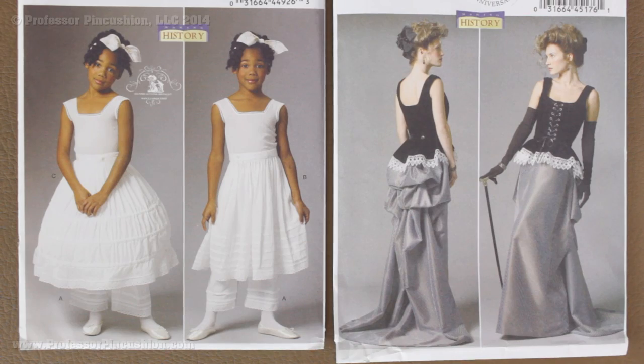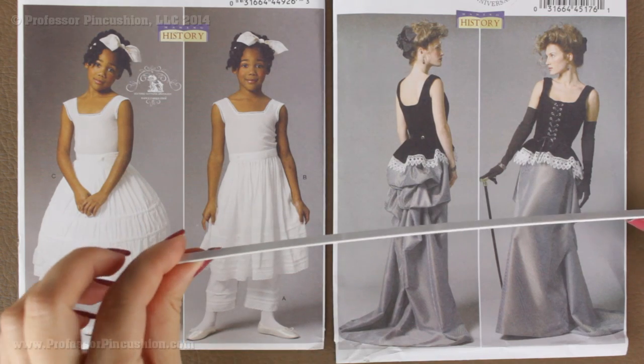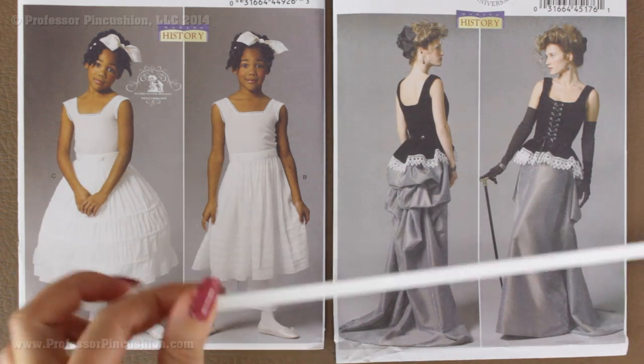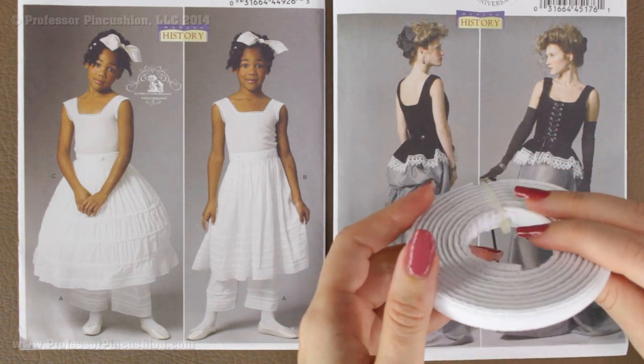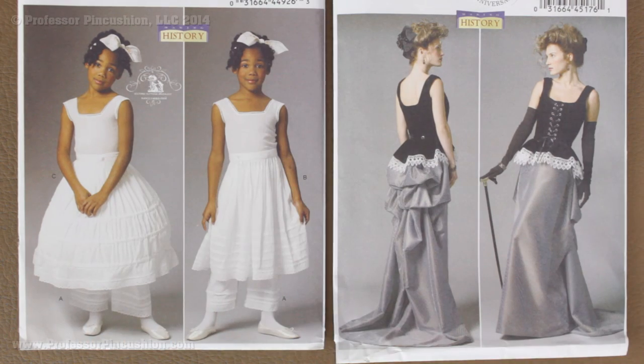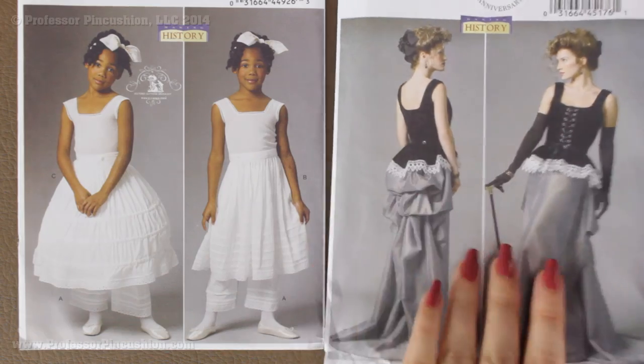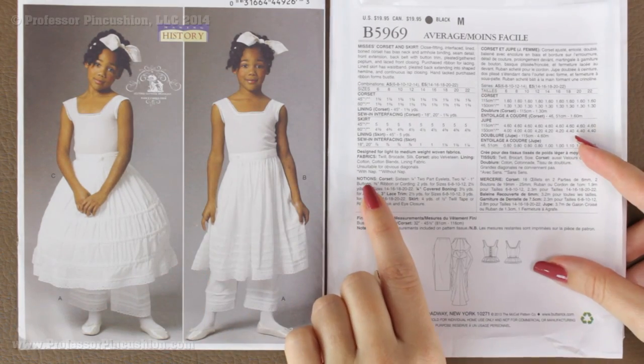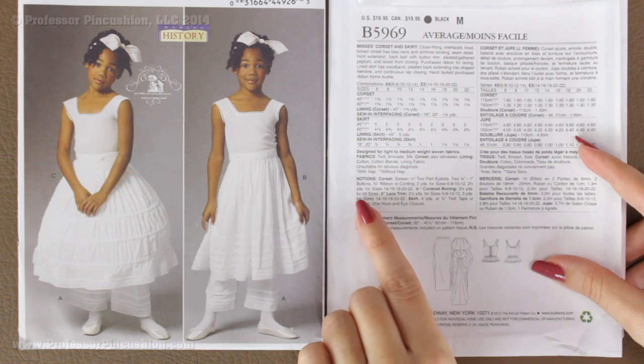Boning can be used in corsets, bustiers, swimsuits and strapless gowns. What exactly is it? Well, it's a piece that's either made out of steel or plastic that can be sewn into the garment to either provide support such as in this corset, or it can be curved boning in order to create an effect like create this hoop skirt. Now to find out if your pattern actually needs boning, you're going to look in the notions section and you can see right here covered boning and then it tells you how much you're going to need.